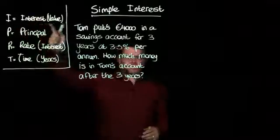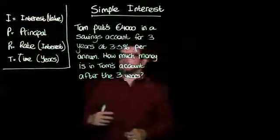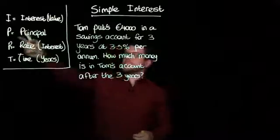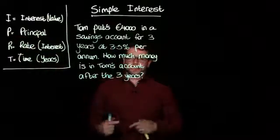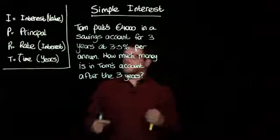I is interest, but that's the interest value. That's the amount of actual money that is accrued. P is principal. That's the amount of money that's put into the account or is invested, depending on the question.